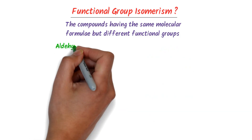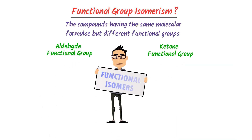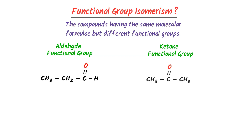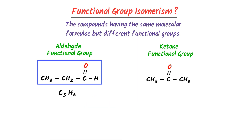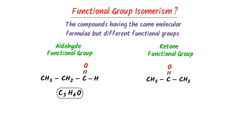Secondly, consider the functional group of aldehyde and ketone. Functional isomers also exist between ketones and aldehydes. For example, consider this aldehyde and this ketone. In this aldehyde molecule, there are three atoms of carbon, six atoms of hydrogen, and only one atom of oxygen. So the molecular formula of this compound is C3H6O.